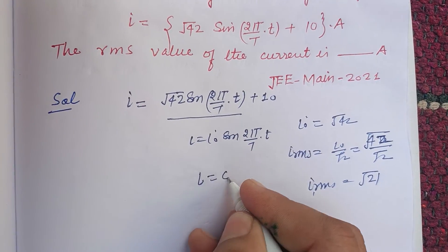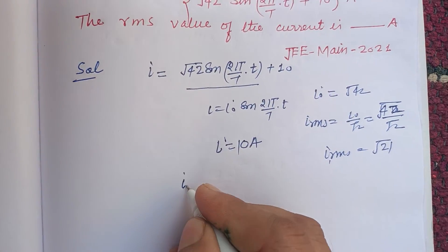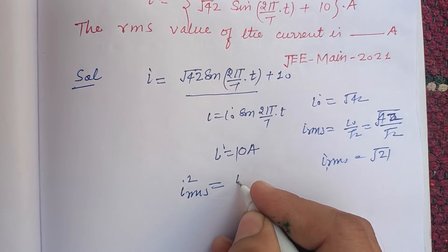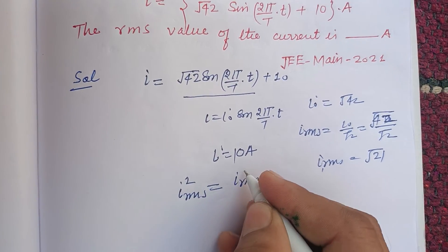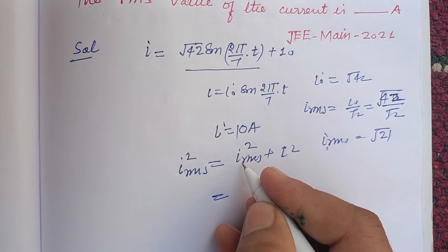And here i is also given as 10 ampere. Therefore, i_rms total squared equals i_rms squared plus i squared.